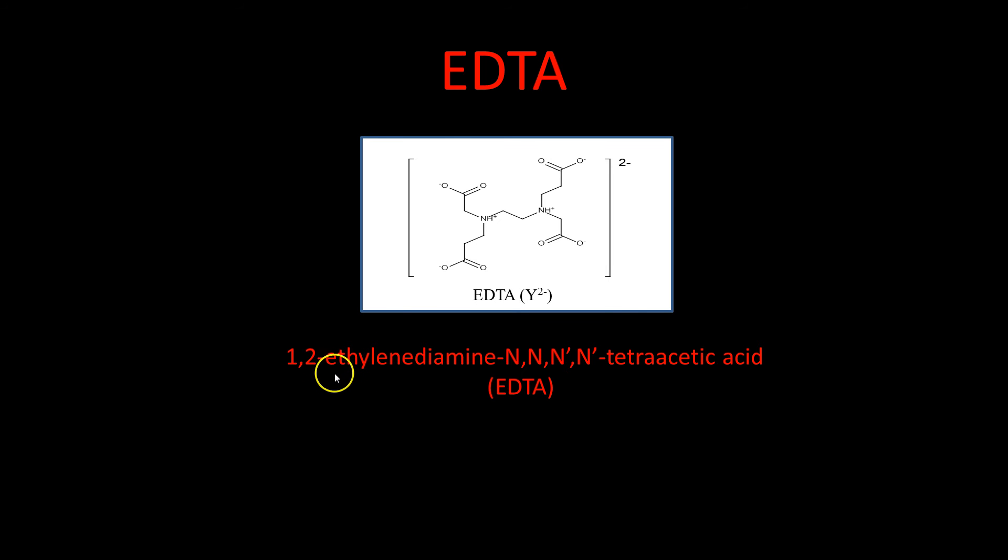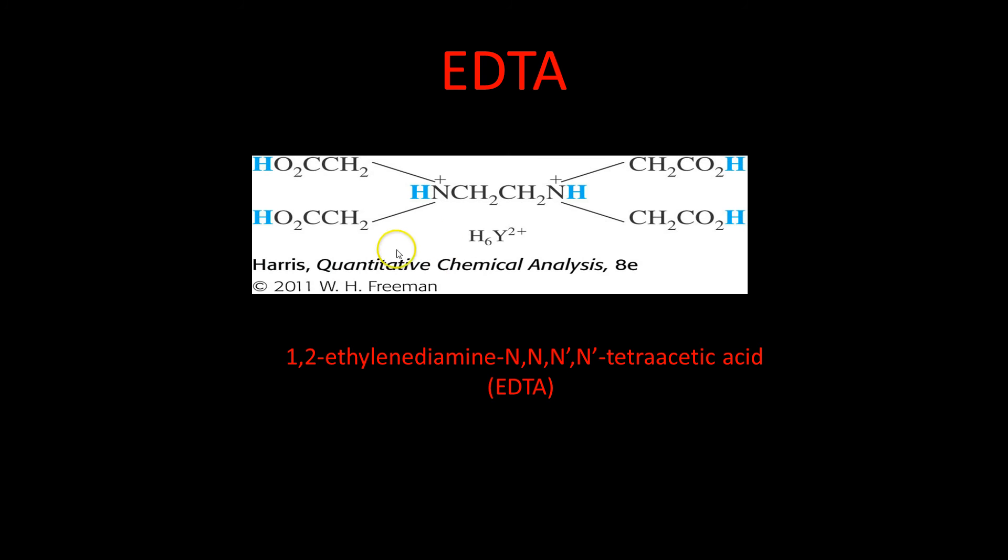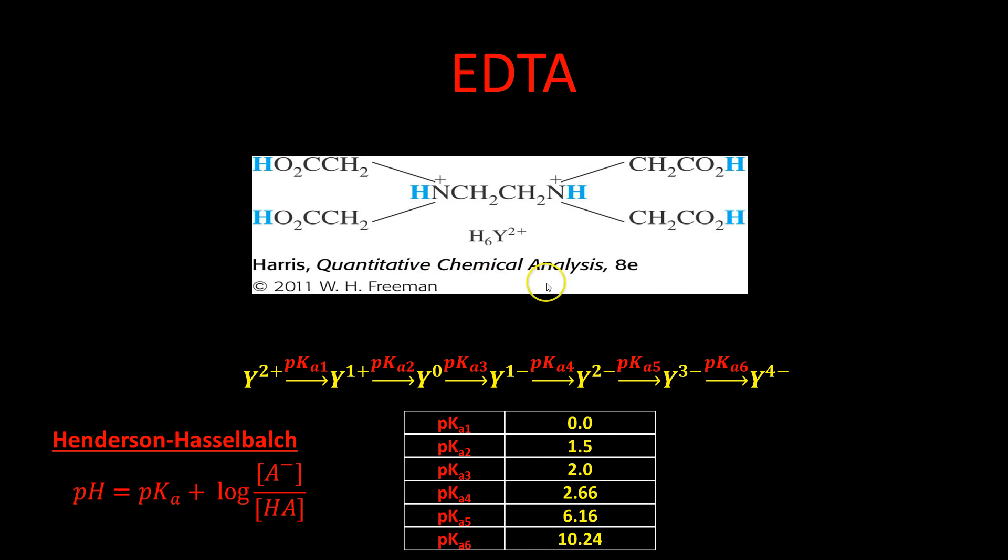Here's the full name of EDTA: 1,2-ethylenediamine-N,N,N',N'-tetraacetic acid. You can see why we just call it EDTA. This is the same molecule of EDTA, just written in a different way. You can see that there's actually six different locations where we could add protons. This is a really complex weak acid, weak base system, and it will be dictated by this long series of equilibrium reactions.